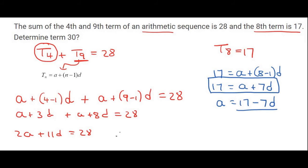And so that means we'll have 2, and then in brackets I'm going to replace the A with 17 minus 7D. I'm plugging into this equation, plus 11D equals 28.